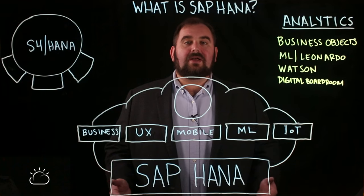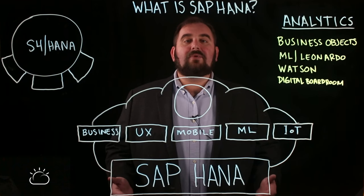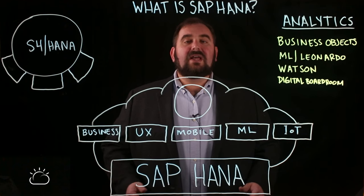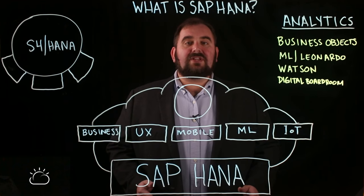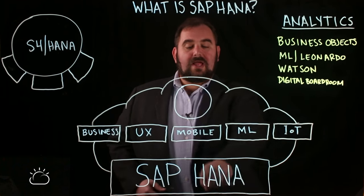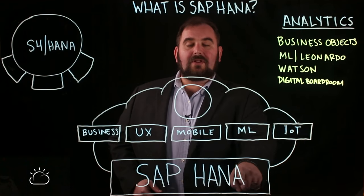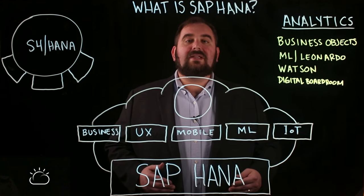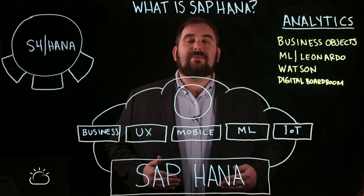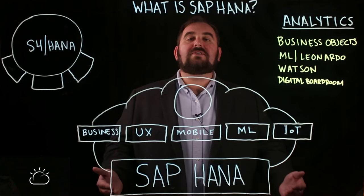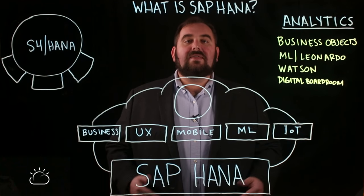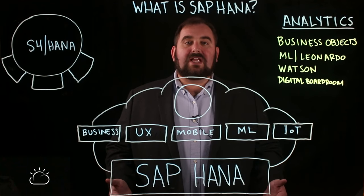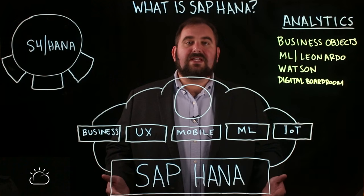SAP HANA is an in-memory database and HANA is actually an acronym. It stands for High Performance Analytical Appliance. The idea behind it is that it's a database that is orders of magnitude faster than any traditional database that runs on a disk.